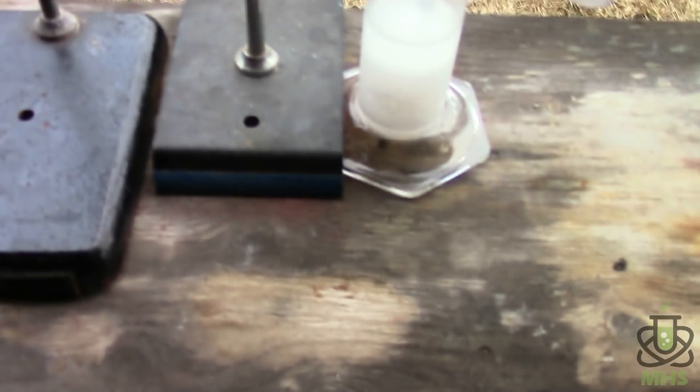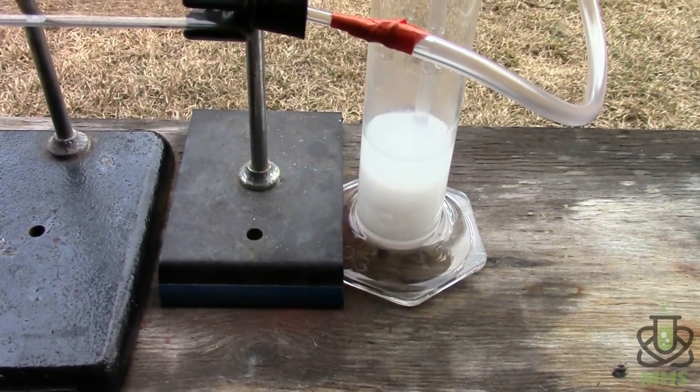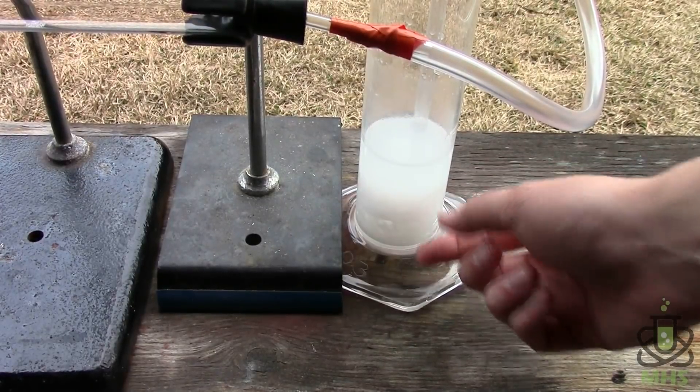Now if we come over and look at the lime water, you see it's totally opaque. There's actually a lot of calcium carbonate that got produced there. You see this layer of solids.